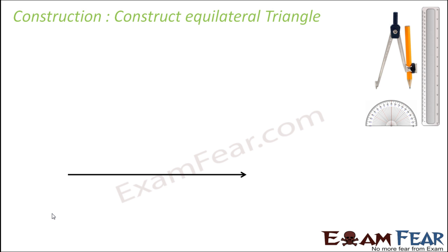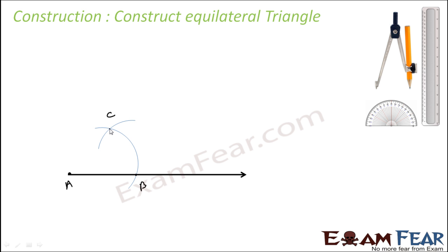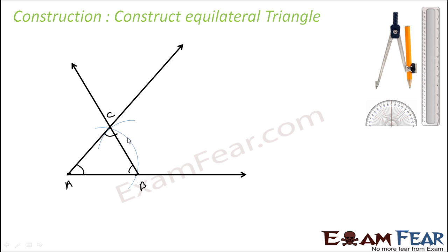To draw an equilateral triangle, from point A draw an arc of the required side length cutting at B. Then with B as centre and the same compass length, draw another arc cutting the first arc at C. Join AB, BC, and CA. Triangle ABC is the equilateral triangle — all angles are 60° and all sides are of the same length, because AC and AB are equal from the arc at A, and BC equals AB from the arc at B.